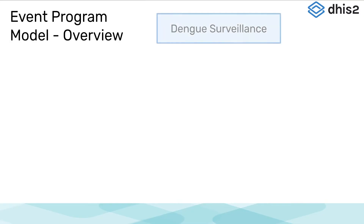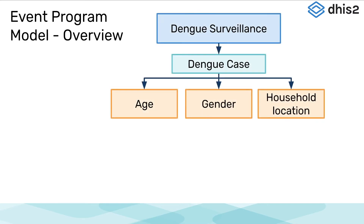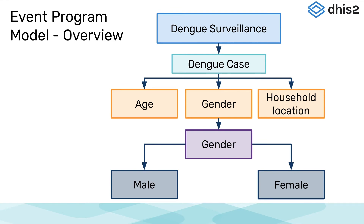Back to the Dengue surveillance event program example, some of the elements you would want to collect are the age of the case, the gender of the case, and the location of their household. Age would be collected as a number and location could be entered as GPS points, but the gender would have options associated with it. In this case, you would have an associated option set called gender linked to the gender data element. This option set has the options male and female that can be chosen from.